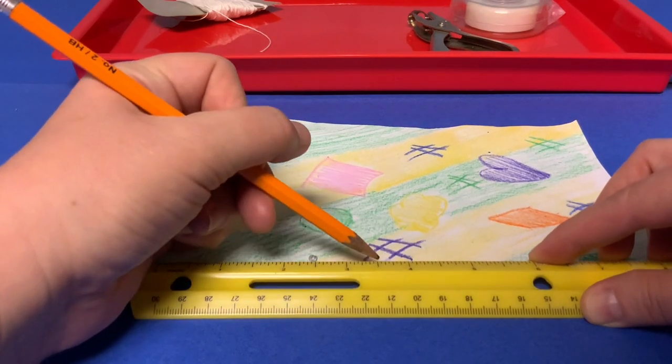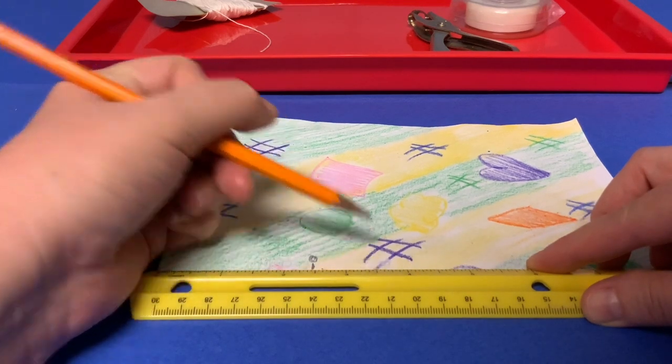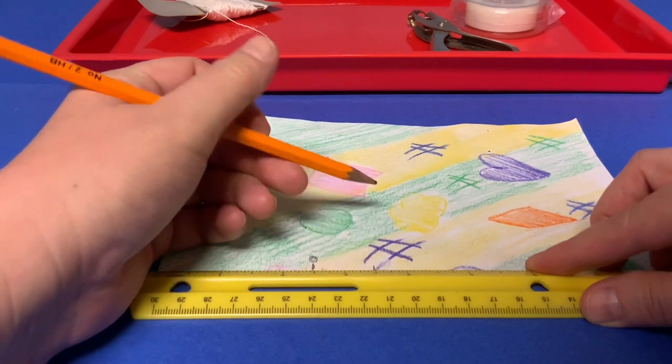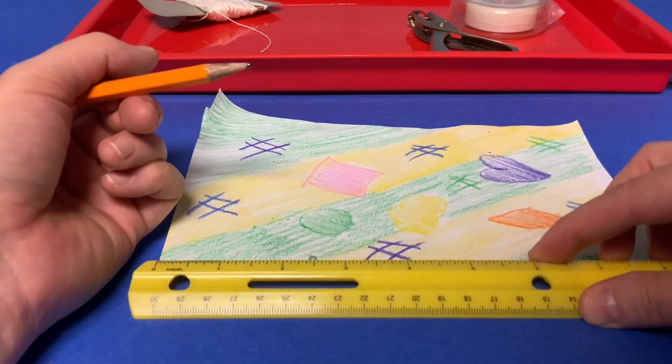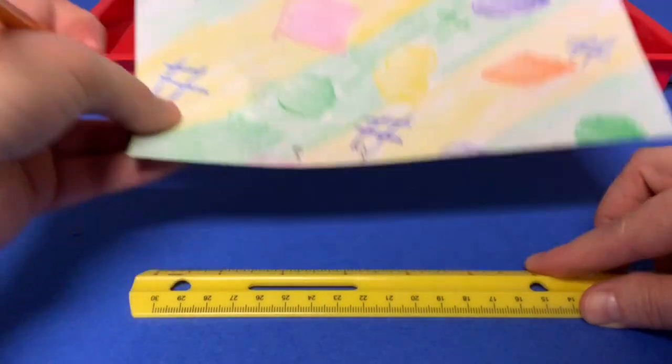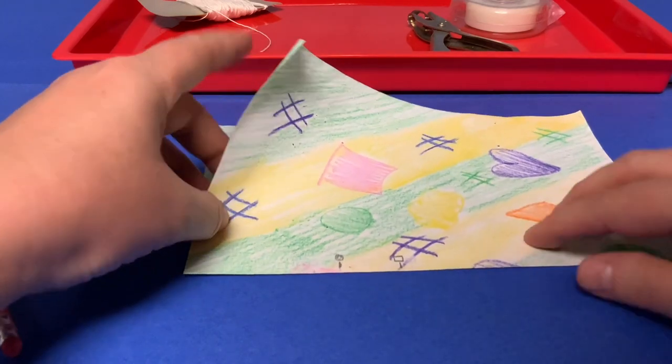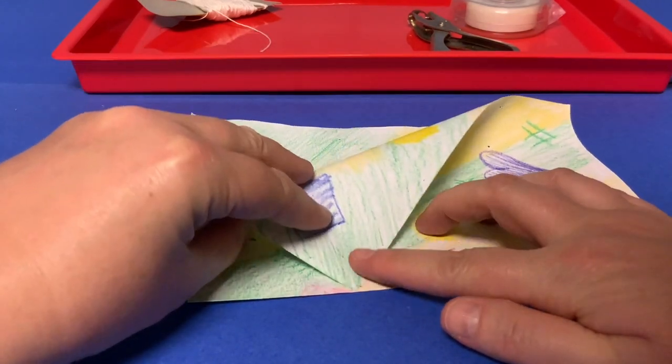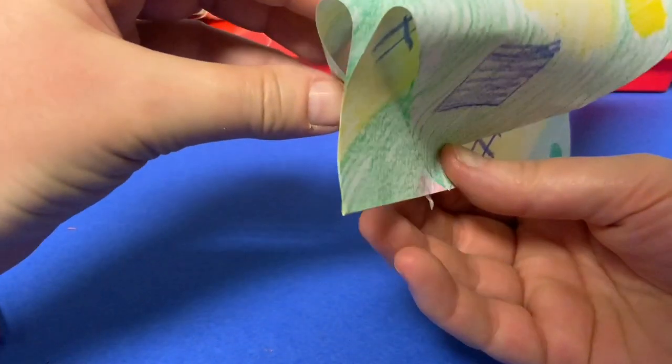Next, I counted off three and a half inches and made another mark. At the top of this one, I drew a square so I could tell the difference between the two marks. Try out your engineering skills by making more than one kite and use different lengths and inches, just to see if it changes how your kite flies. Take the top left corner of your paper and fold it down to the circle mark. Do the same thing with the top back left corner.